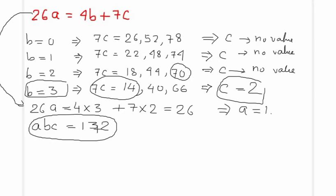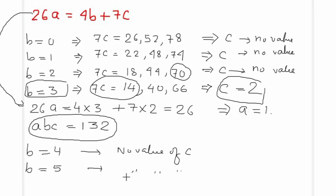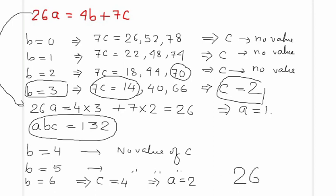If B = 4 or B = 5, no valid value of C is possible. But when B = 6, we can find C = 4, and as a result A = 2. Therefore, the number in this case is ABC = 264. This is the next 3-digit number with the said property.